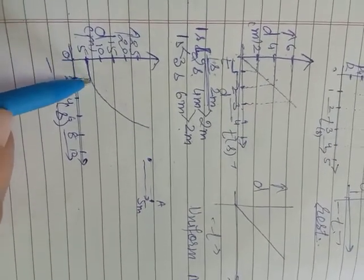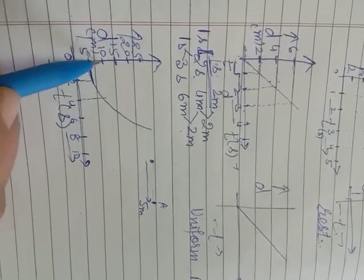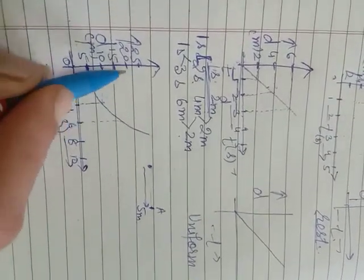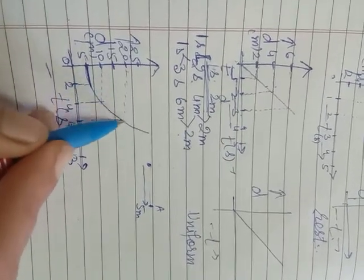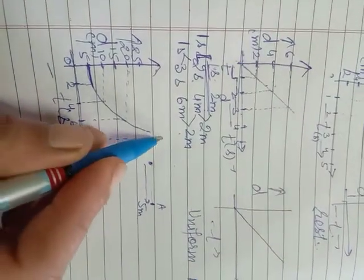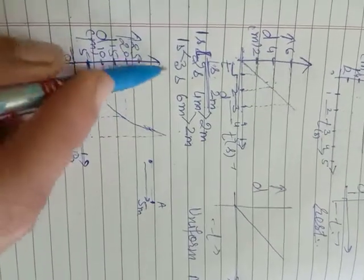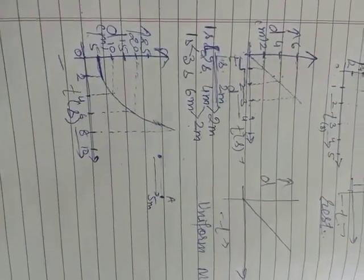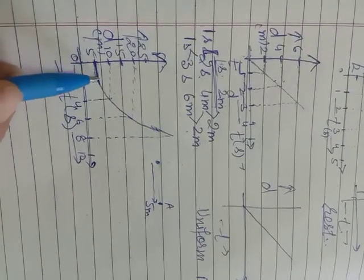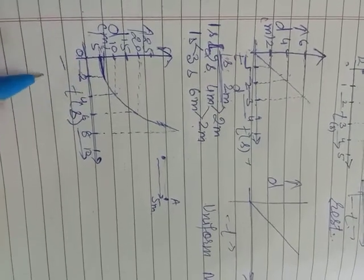Now see — in the first two seconds the object is almost at 5 meters, with only a very slight change in position. At 4 seconds it is at approximately 10 meters, then at 6 seconds it is at approximately 20 meters, and at 8 seconds it is above 25 meters — approximately around 11 meters, or let's say 6 meters at 2 seconds.